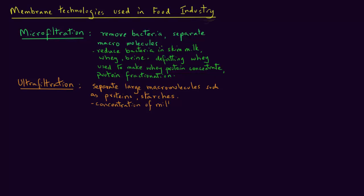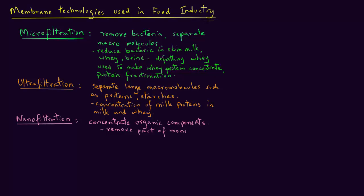And ultrafiltration is also used for concentrating milk proteins in milk and whey. Nanofiltration is used to concentrate organic components. It will remove part of the monovalent ions, for example, sodium and chloride. Nanofiltration is also used for partial desalinization of whey.